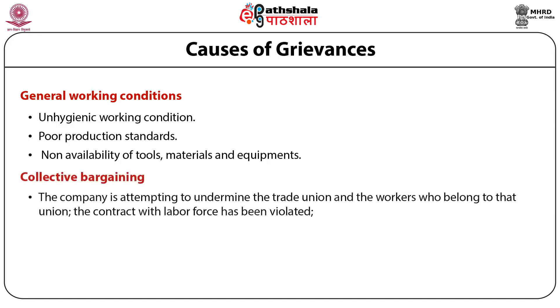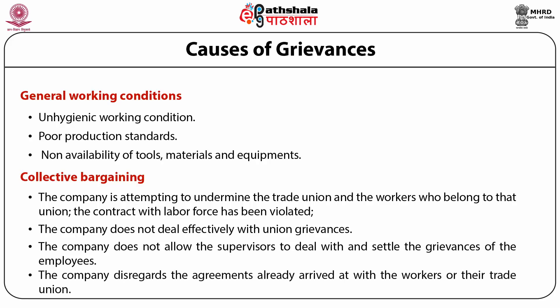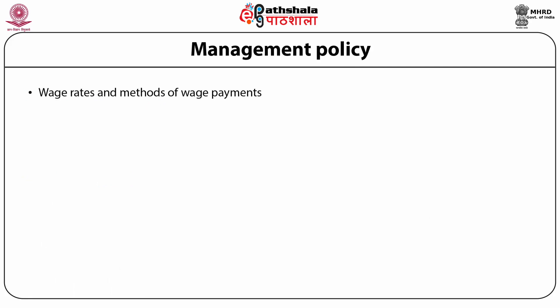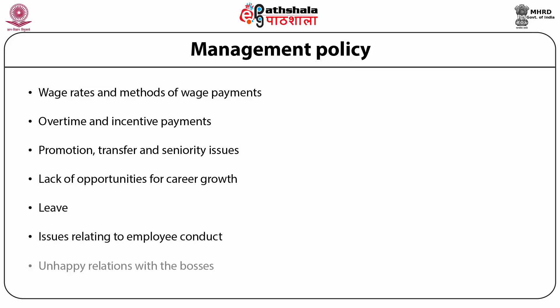Collective bargaining grievances arise when the company attempts to undermine the trade union, violates the labor contract, does not deal effectively with union grievances, prevents supervisors from settling employee grievances, or disregards agreements already reached with workers or their union. Management policy grievances include issues related to wage rates, methods of wage payment, overtime and incentive payments, promotion, transfer and seniority, lack of career growth opportunities, leave, employee conduct, and unhappy relationships with supervisors.